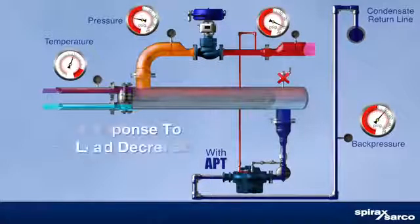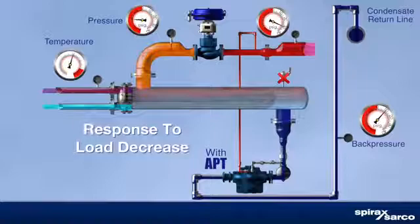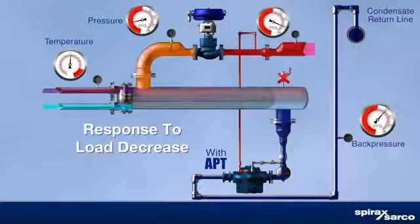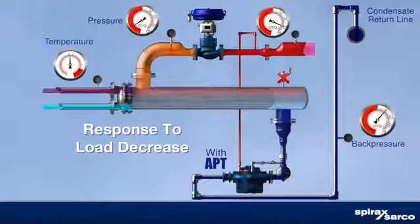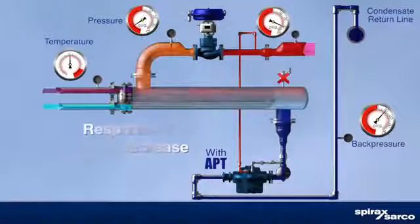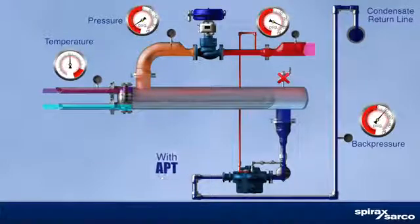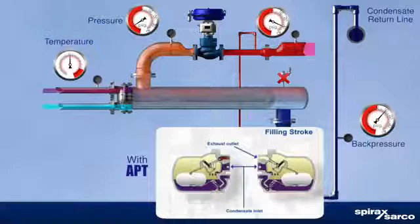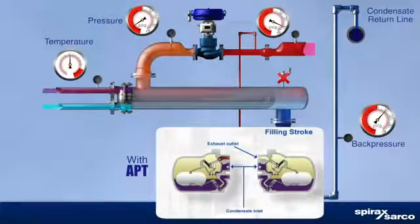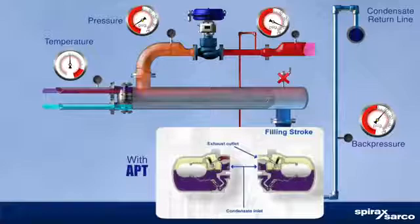By not using a vacuum breaker, you can reduce condensate acidity and large temperature swings in the heat exchange equipment. Heat transfer and control improve. Corrosion, water hammer, tube failure, excessive treatment chemical dosing, and high maintenance costs become distant memories.